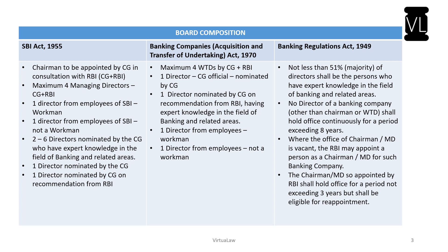For other banks under the Banking Companies (Acquisition and Transfer of Undertakings) Act: there can be a maximum of four whole-time directors appointed by Central Government in consultation with RBI, one director who shall be a Central Government official nominated by the Central Government, one director on recommendation from RBI having expert knowledge in banking, one director from employees who is a workman, and one director from employees who is not a workman.